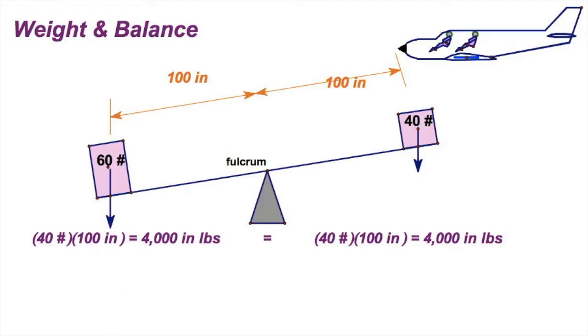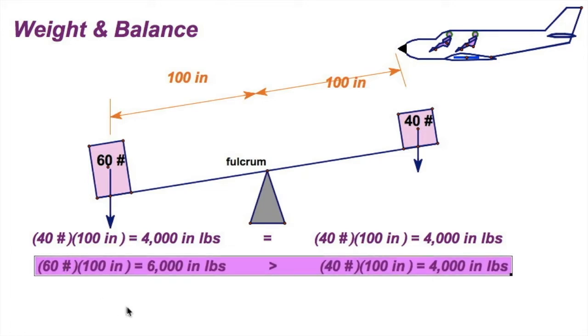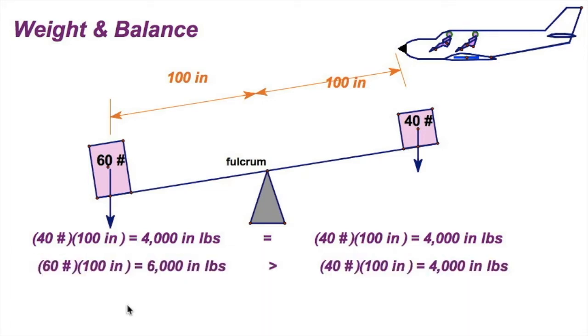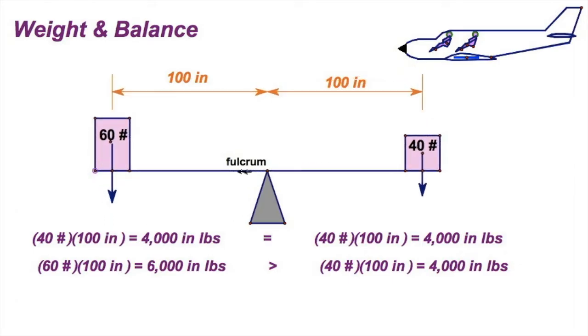Because we have, in fact, inequality. We have 6,000 inch pounds on the left, 60 times 100, and we have 40 times 100, or 4,000 on the right. Now this balance is only going to be balanced if those two moments are equal. So we've got to figure out some way. And intuitively, you know what we've got to do.